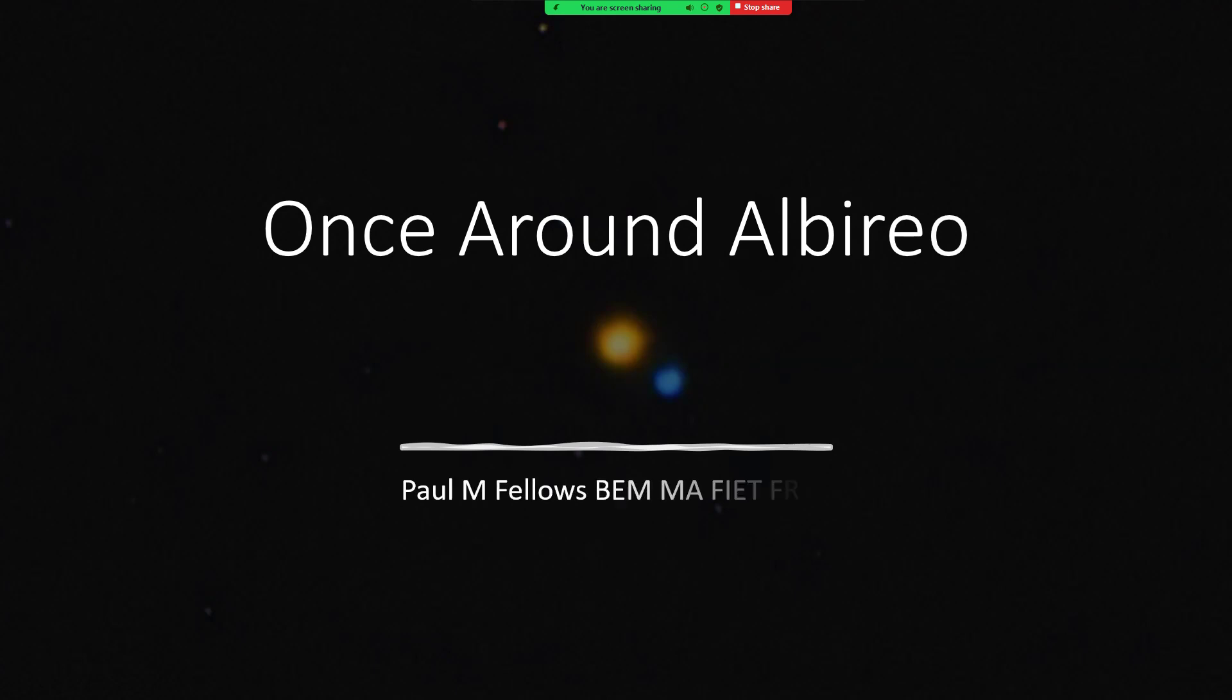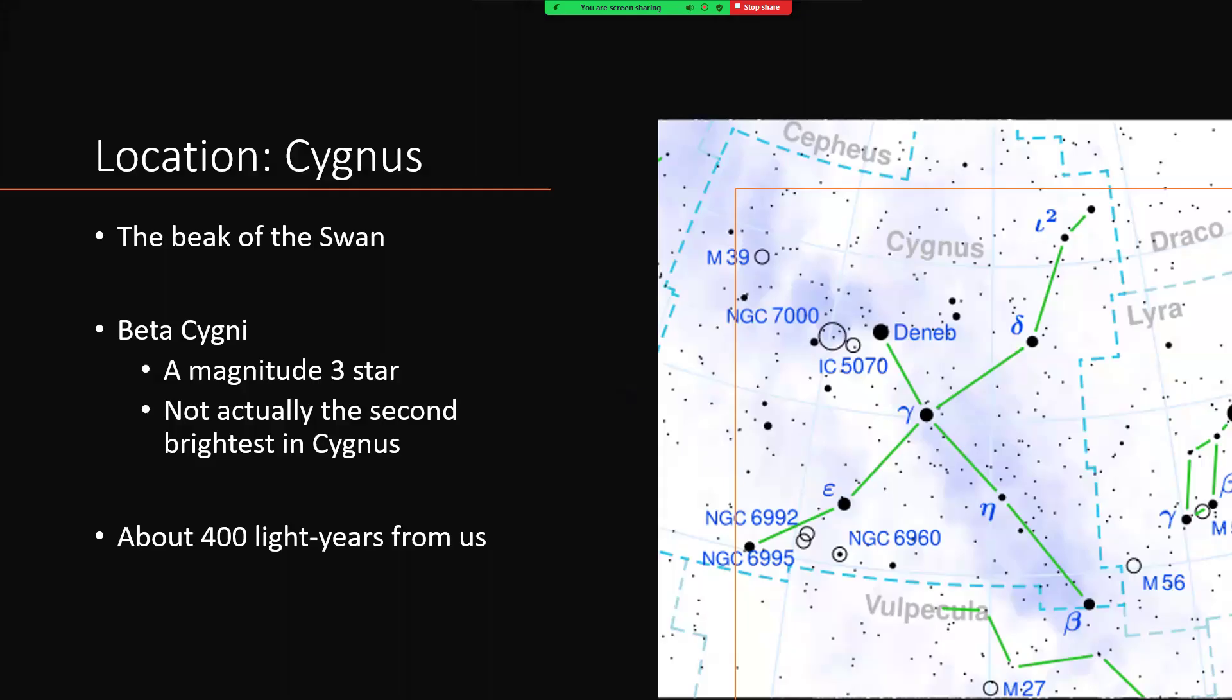Once around Albireo, one of the prettiest stars to look at through a telescope in the night sky. It's located in the constellation of Cygnus, actually the beak of Cygnus the Swan, and it's designated beta.